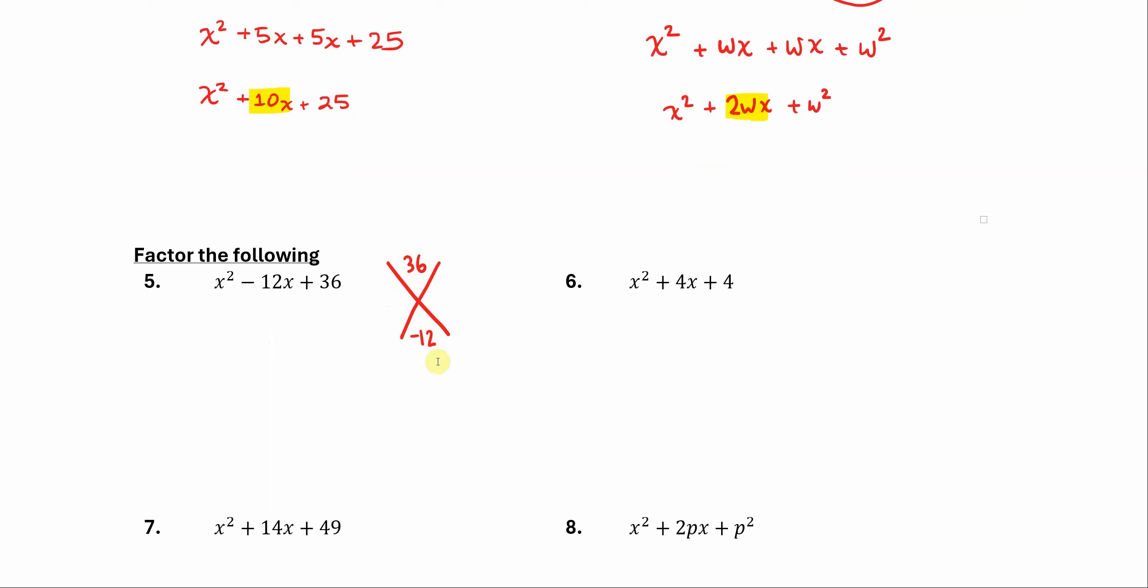And add to negative 12. So it'll take you a little bit of time, maybe some little bit of guessing and testing, but it's not hard to see that it's going to be negative 6 and negative 6.